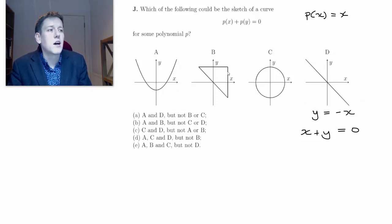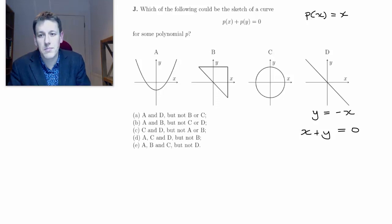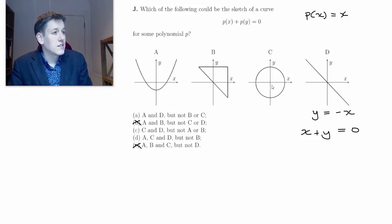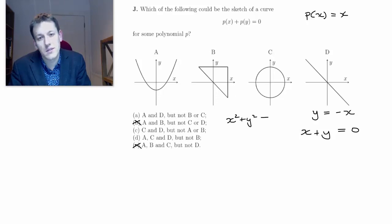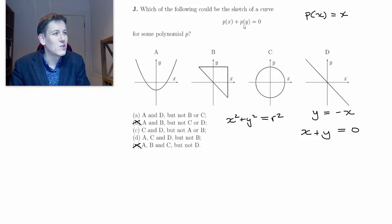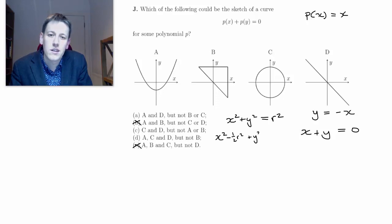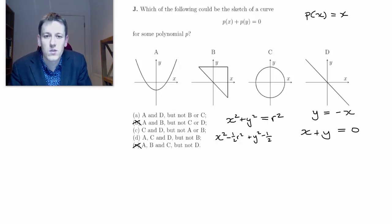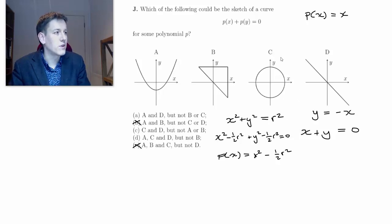Since d works, I like to look at the answers as soon as I've ruled one out. So it can't be b already and it can't be e because they say not d. Now c is another one I can write down quite easily. This is just a circle: x² + y² = r². I could subtract ½r² twice and get x² - ½r² + y² - ½r² = 0. So my polynomial is x² minus some constant, half of the radius squared. So c works.